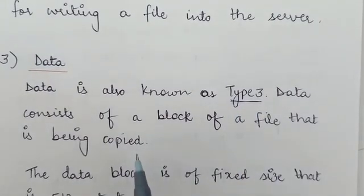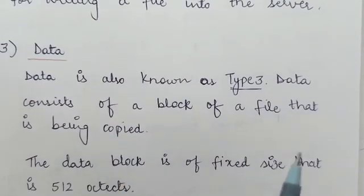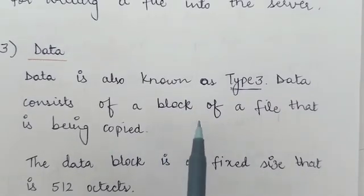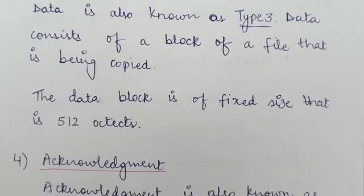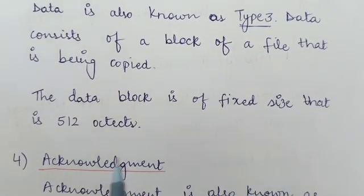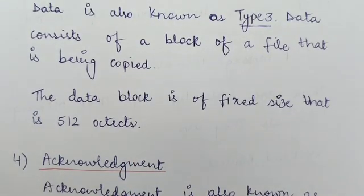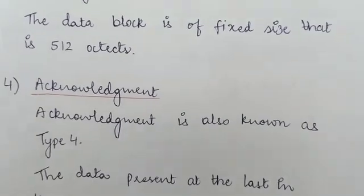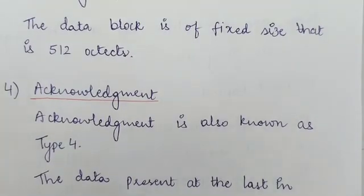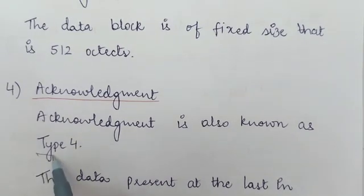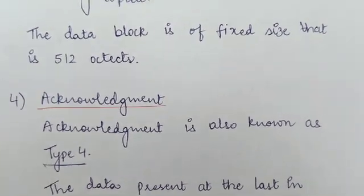Data consists of a block of file that is being copied — it is the actual message that has to be copied. The data block is of fixed size, that is 512 octets. That means you cannot copy more than 512 octets of a block of a file at any given point of time, since the size is fixed.